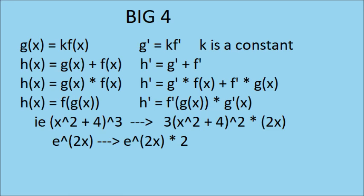If g of x equals k f of x, then g prime x is equal to k f prime x. If h of x is equal to g of x plus f of x, then h prime x is equal to g prime x plus f prime x. If h of x is equal to g of x times f of x, h prime x is equal to g prime times f plus f prime times g. If h of x is equal to f of g of x, then h prime x is equal to f prime of g of x times g prime x.